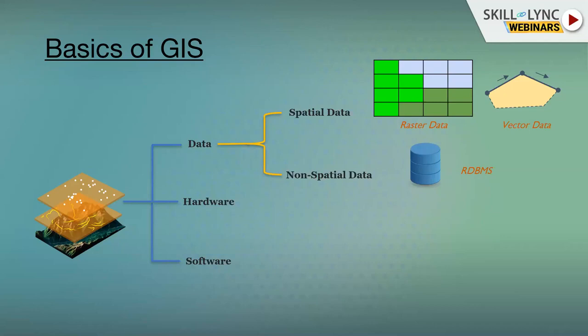Many people feel that remote sensing and GIS are synonymous, but remote sensing is actually one of the data sources for GIS. Without remote sensing, you may not get your GIS data as we know it today. Remote sensing is a vast subject — I'll focus only on how it applies to GIS and how it fetches data that you can then relate to your non-spatial data.